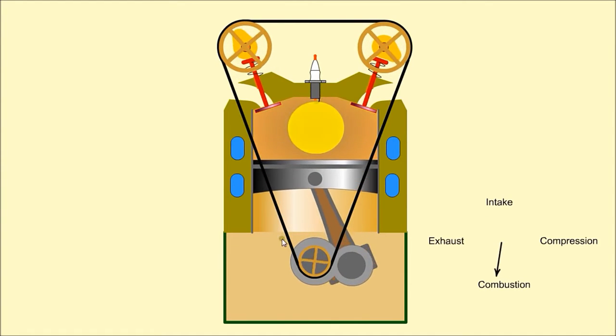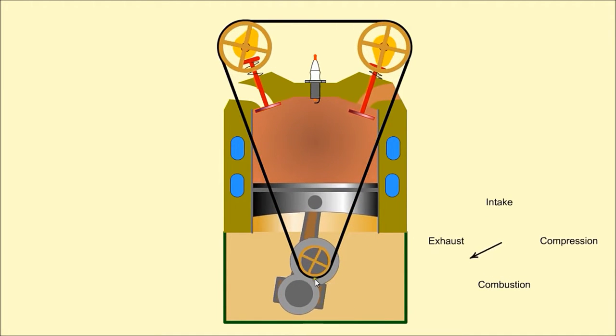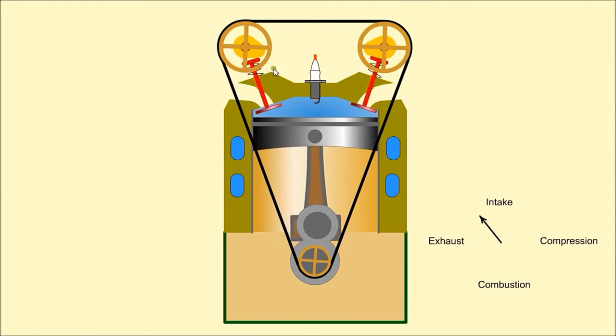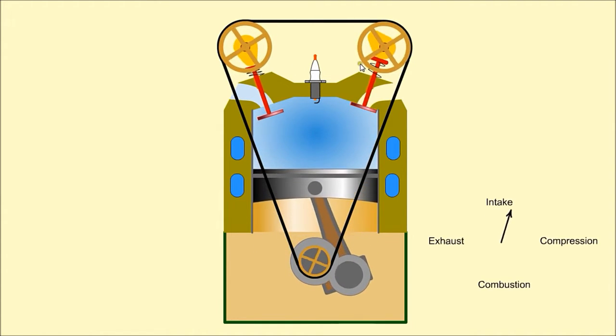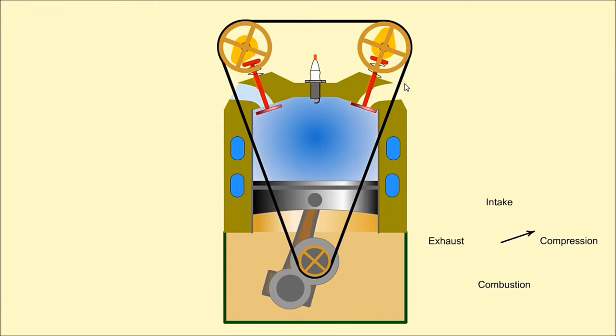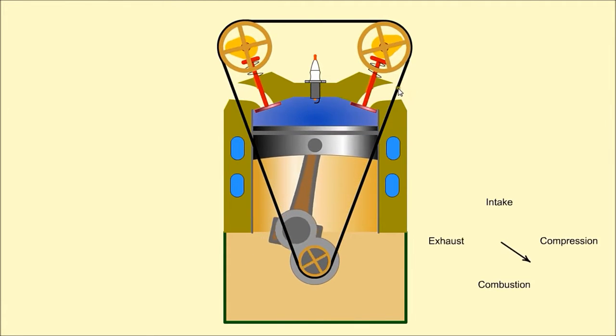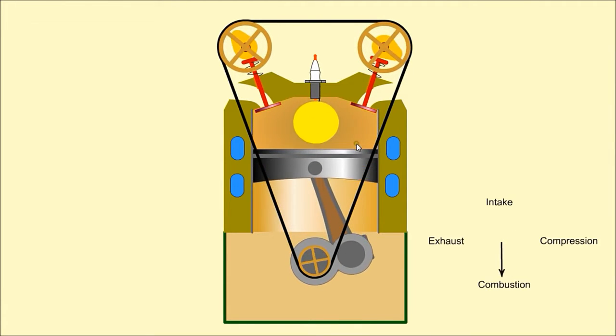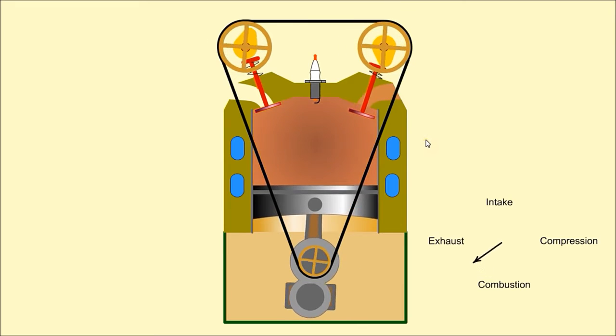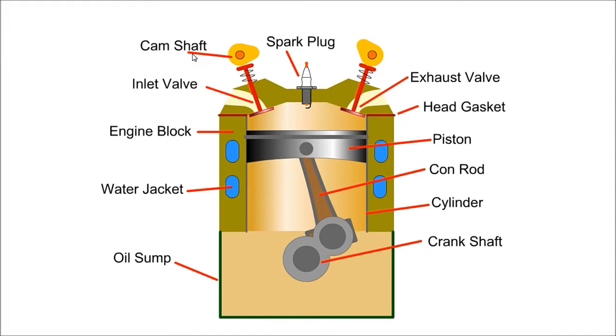This is achieved by using larger diameter pulleys on the camshafts. The timing belt ensures that the valves open and close at the correct time relative to the position of the piston.